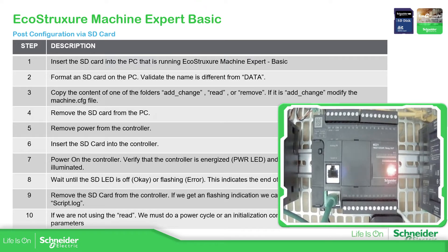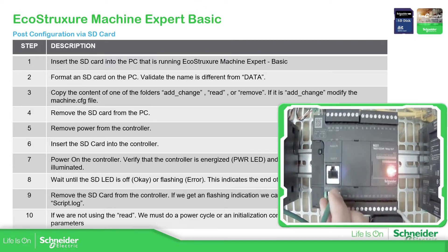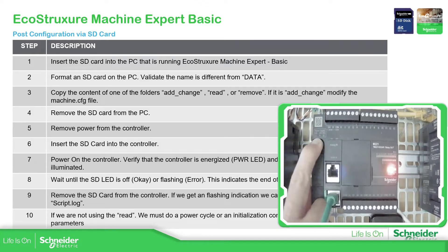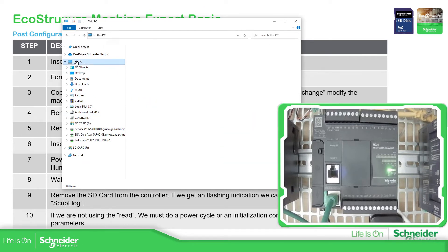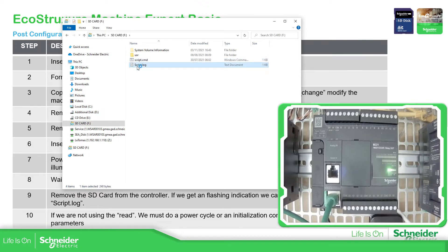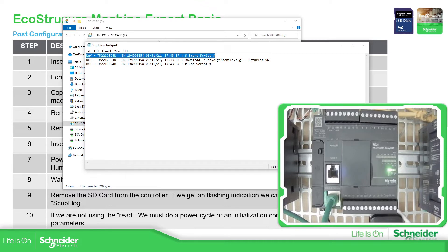Checking that the Ethernet cable is already connected. After powering on and verifying, the SD card LED is already off, which means the script has executed. Now we can remove the SD card from the controller. We then connect the SD card to the laptop to inspect it. You can see there is a script on it: it shows 'Start script', 'Download the configuration', and 'End script'.